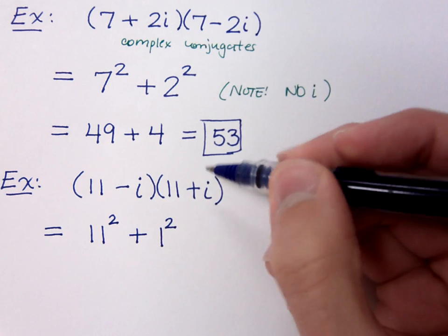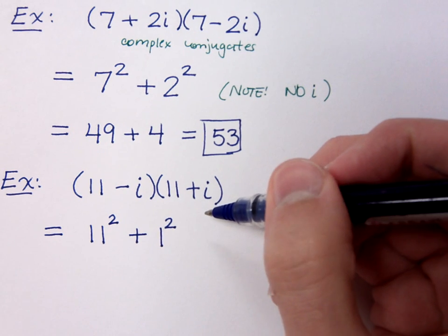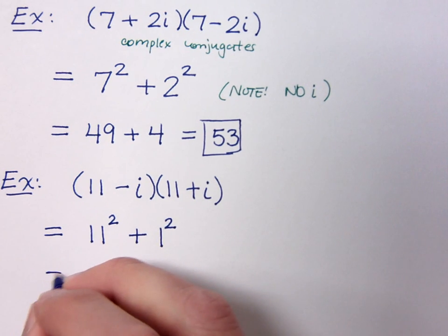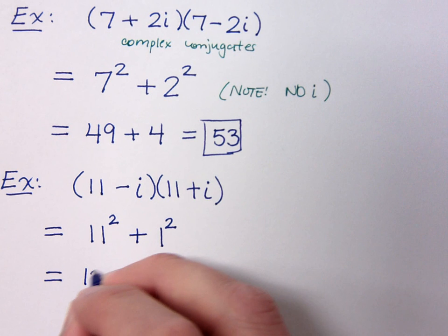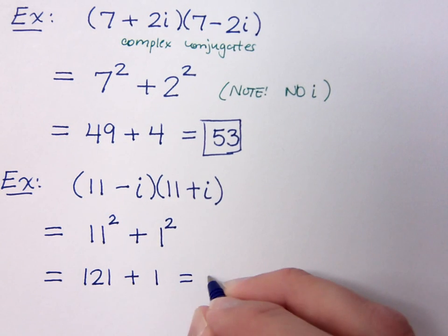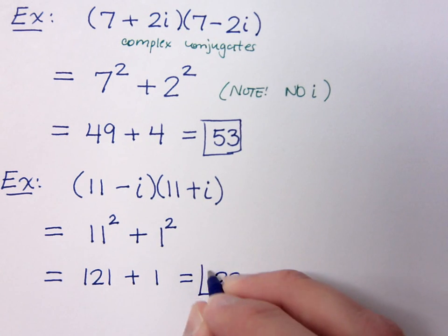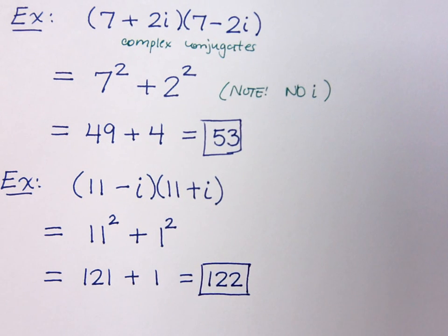See, for some reason, it's very easy to forget that this is a 1i. We don't write the 1, but it's understood to be there. So finishing this problem, this gives me 121 plus 1, so we have 122. Just like that.